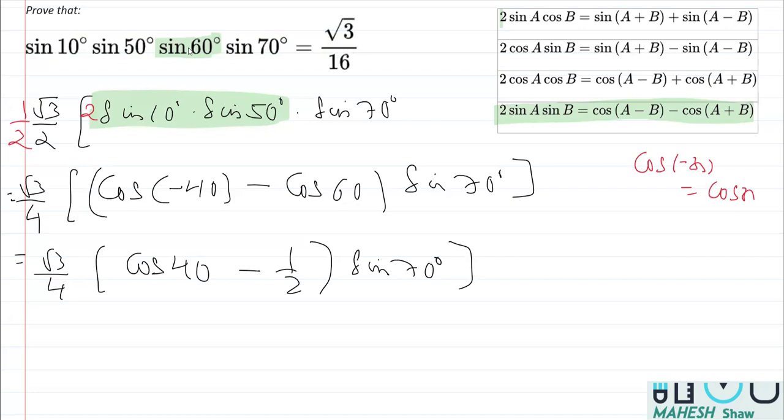Now we'll apply distributive property, will be multiplying sin 70° with these two. So what we'll get here? This is √3 by 4 bracket. If I multiply the sin 70° with cos 40°, it will be sin 70° into cos 40° minus half times sin 70°.